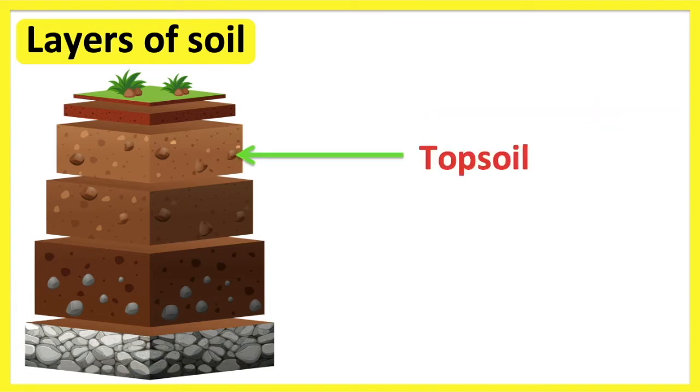The topsoil is also known as A-horizon. The topsoil is the layer consisting of organic matter and minerals which help plant growth. This is the layer in which we plant seeds. Both plants and organisms live in this layer.